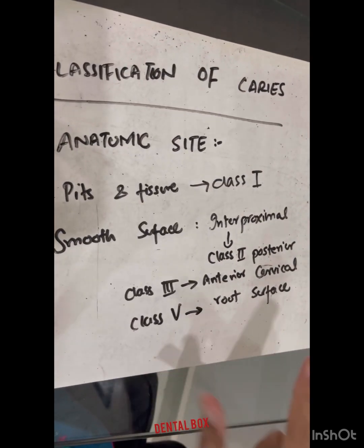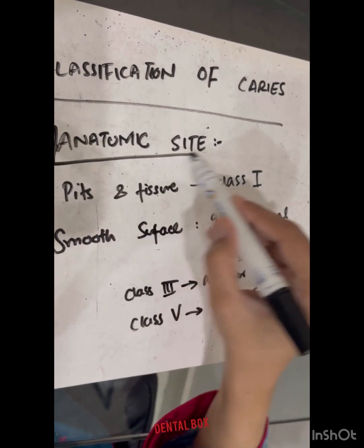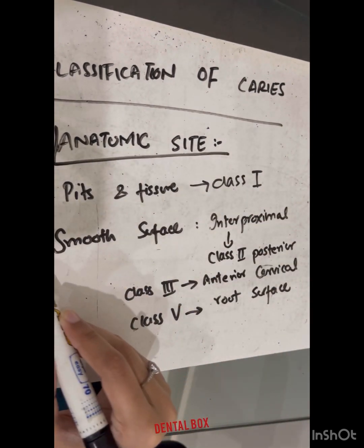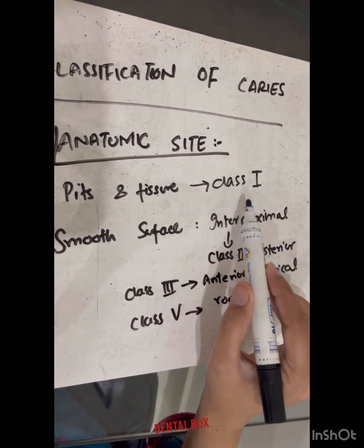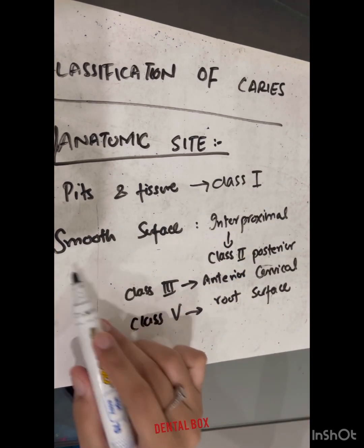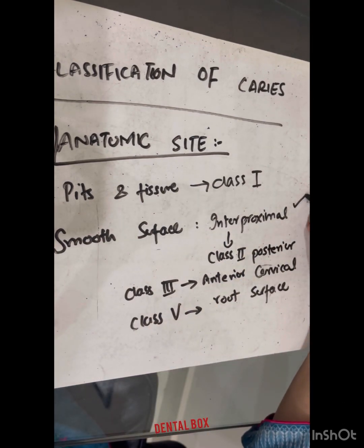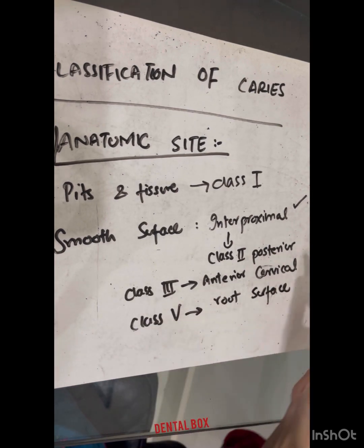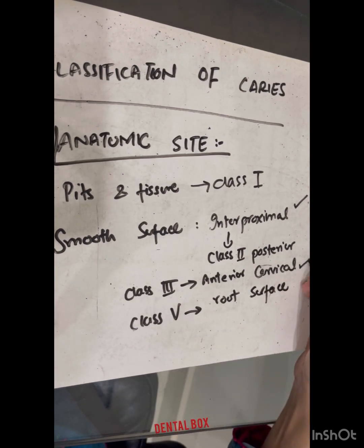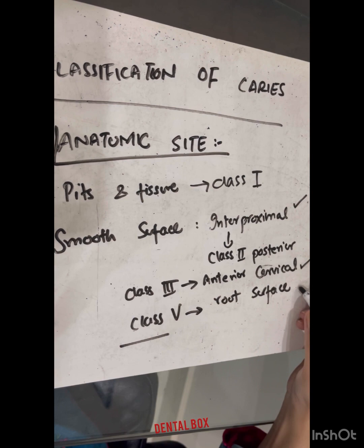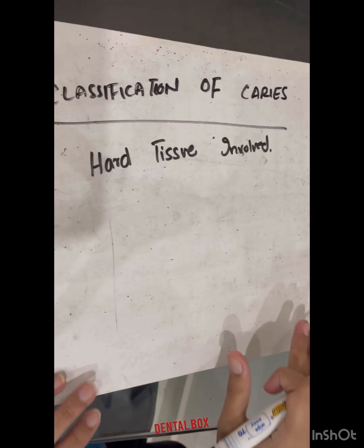Based on the anatomic site, caries is classified into two basic types: pit and fissure caries, which includes class 1, and smooth surface caries. Within smooth surface we have interproximal surface caries, which includes class 2 posterior caries, class 3 anterior caries, and cervical caries, as well as root caries.